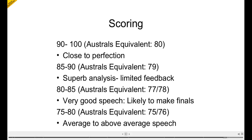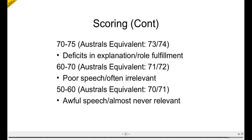In terms of scoring, the average in BP style is the same as Australs — an average speech at Worlds is meant to be 75. The difference is that the spread is much broader. A 79 at Australs, which is one of the top few speeches at the tournament, might be an 86 or 88 at Worlds; a 72 at Australs may be like a 67. The range goes from 50 to 100 instead of 70 to 80 — if you think a speech is really good, don't be freaked out by a number with an 8 in front of it. 50s practically almost never happen, in the same way 70s at Australs practically never happen.